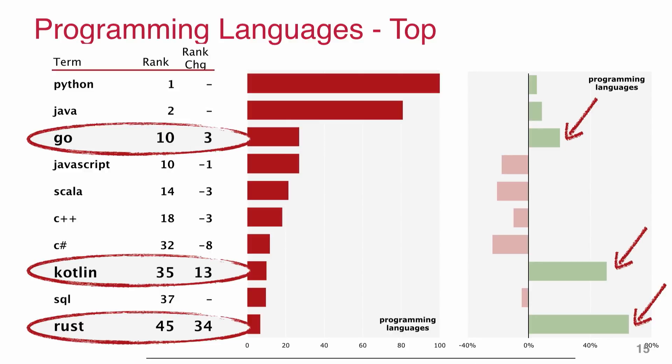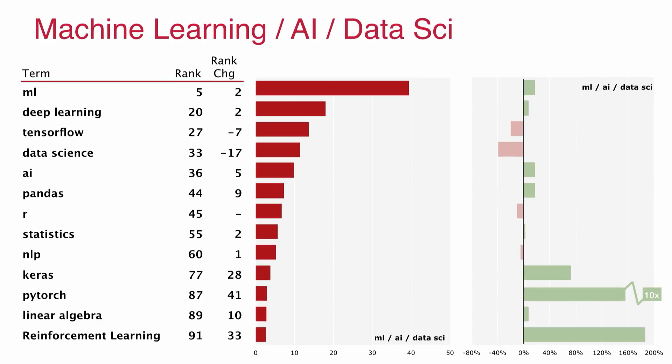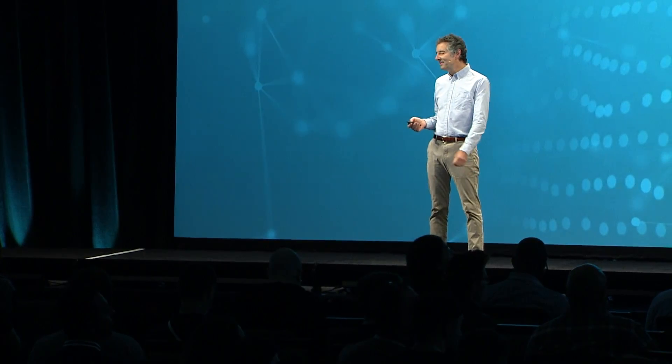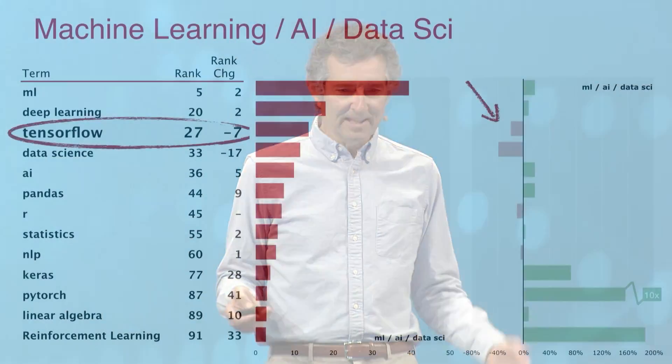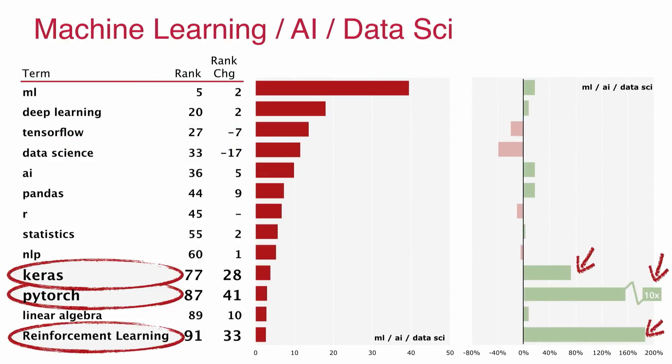Now, machine learning — and I was happy to hear how much machine learning was covered in this conference. I think it's going to be something you're all going to have to pay more attention to over time. TensorFlow is the most well-known thing, but there's a slight decline in that, and these smaller things are getting more attention: Keras, PyTorch, and the concept of reinforcement learning, which is really worth watching.